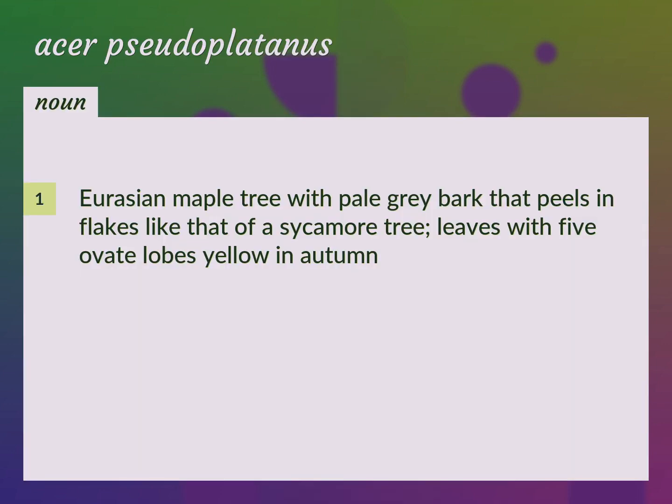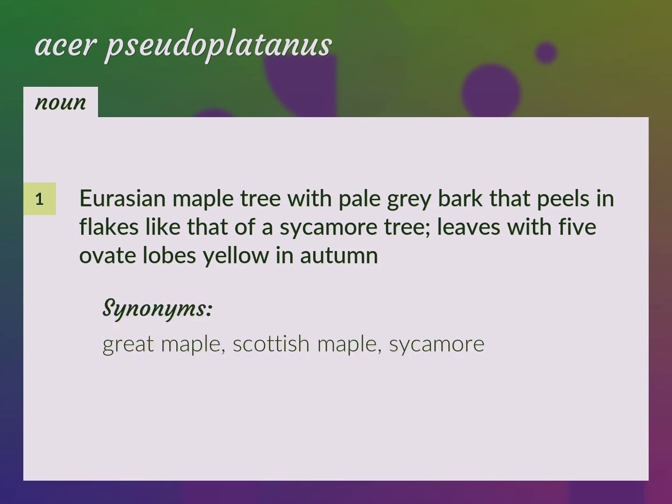Eurasian maple tree with pale gray bark that peels in flakes like that of a sycamore tree. Leaves with five ovate lobes, yellow in autumn. Also known as great maple, Scottish maple, or sycamore.